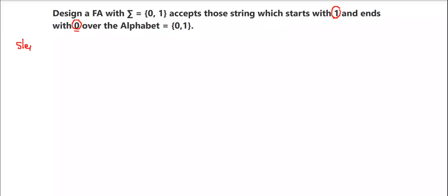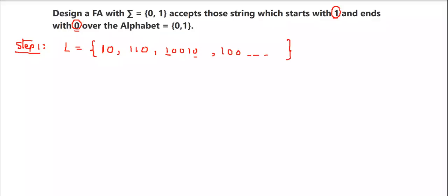As per our steps, step 1: first of all, you have to understand the problem and write the language of strings. L equals the set of strings where the minimum string which starts with 1 and ends with 0 is '10'. Also '110', '1010' — you can write infinitely many strings which start with 1 and end with 0. The minimum string is '10'.